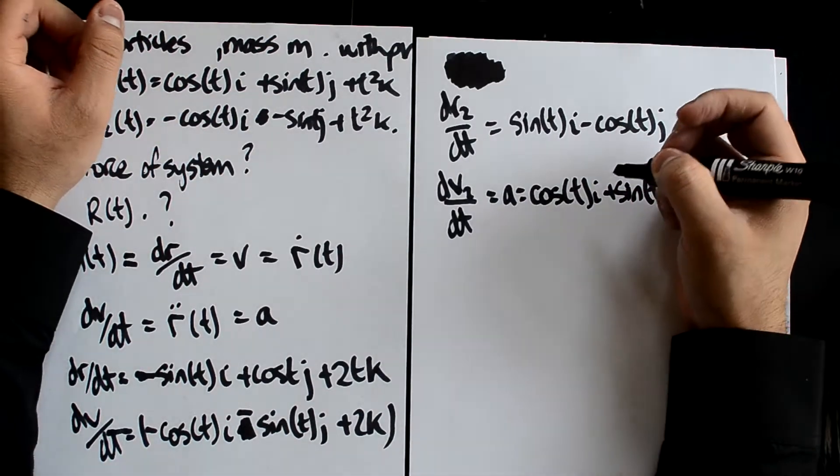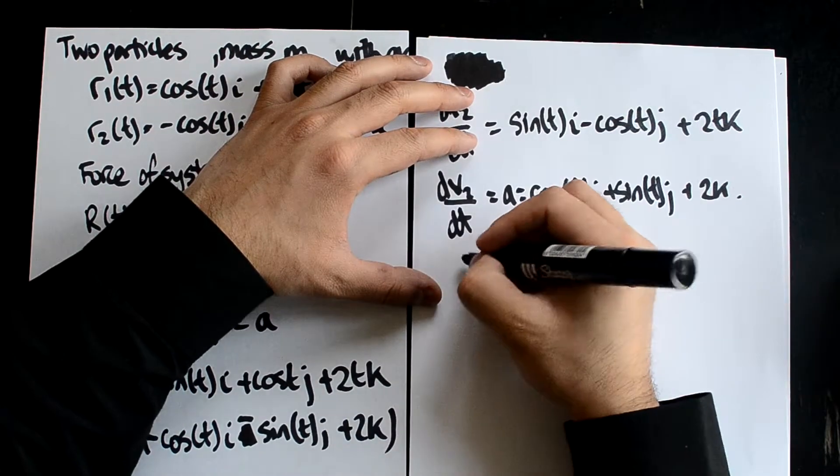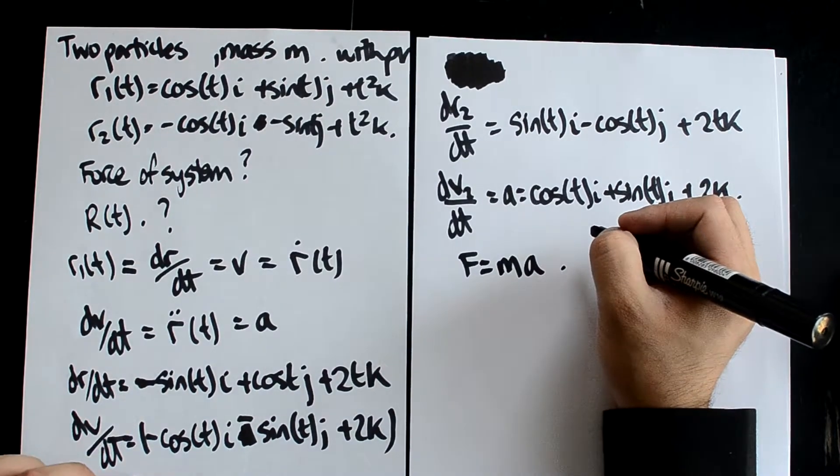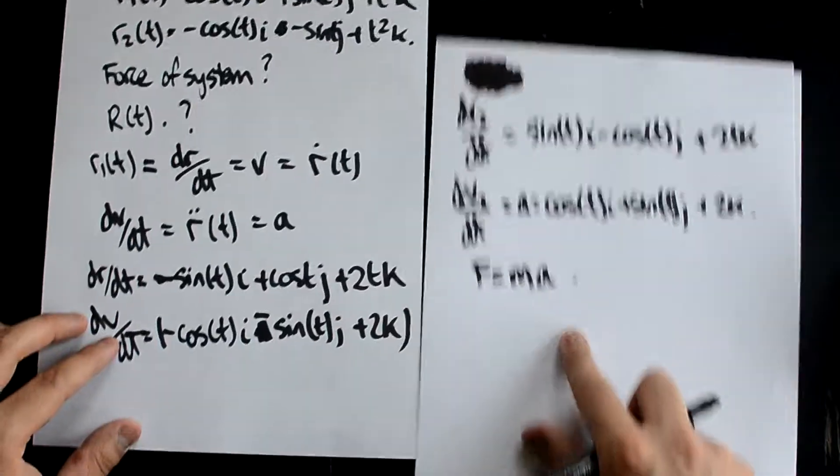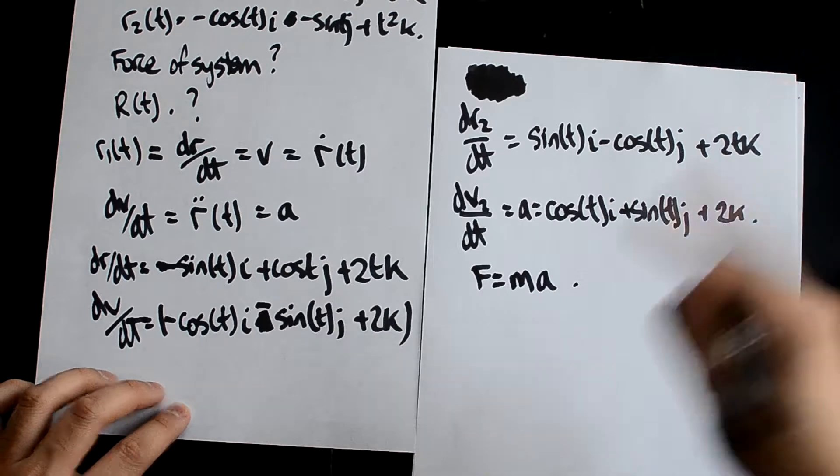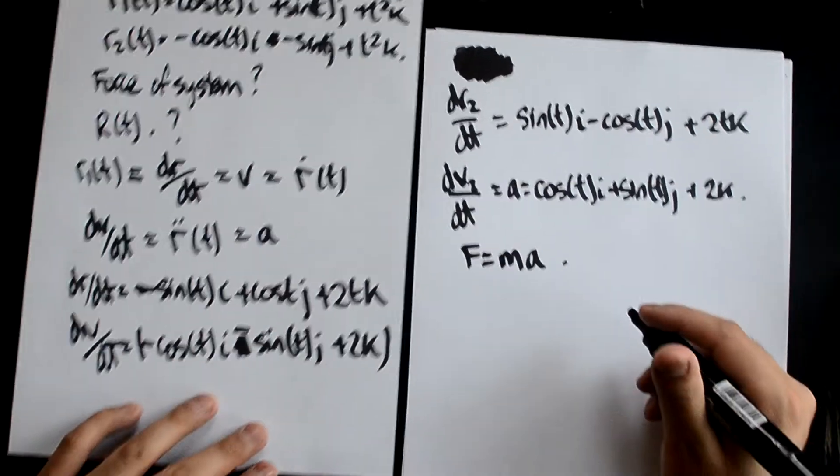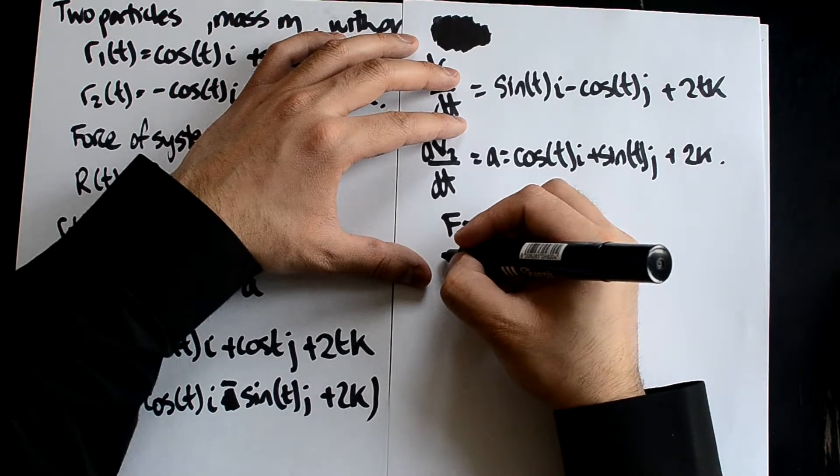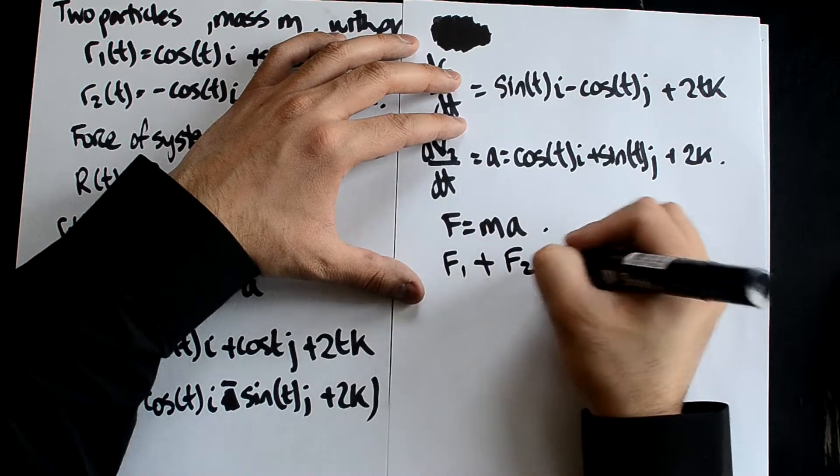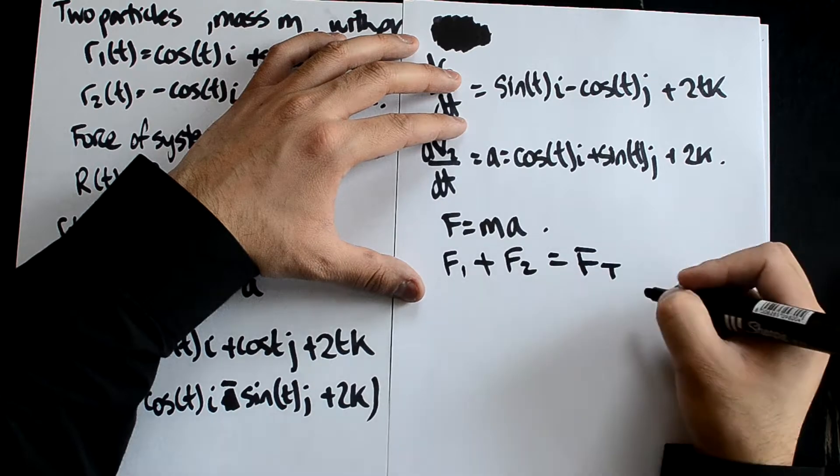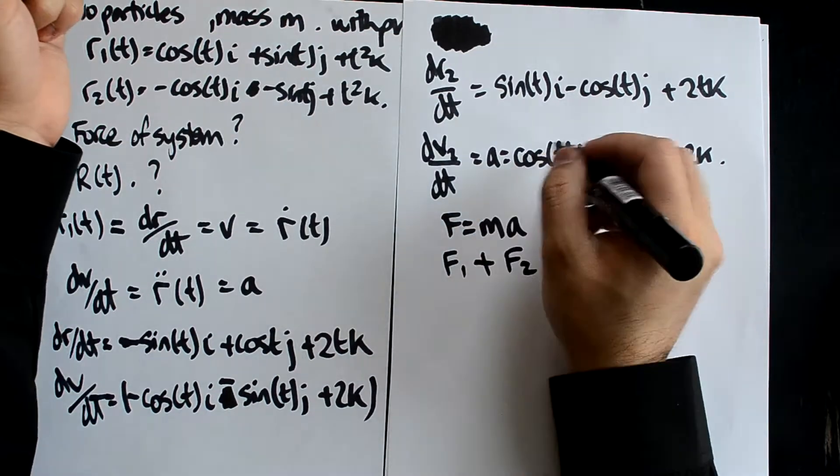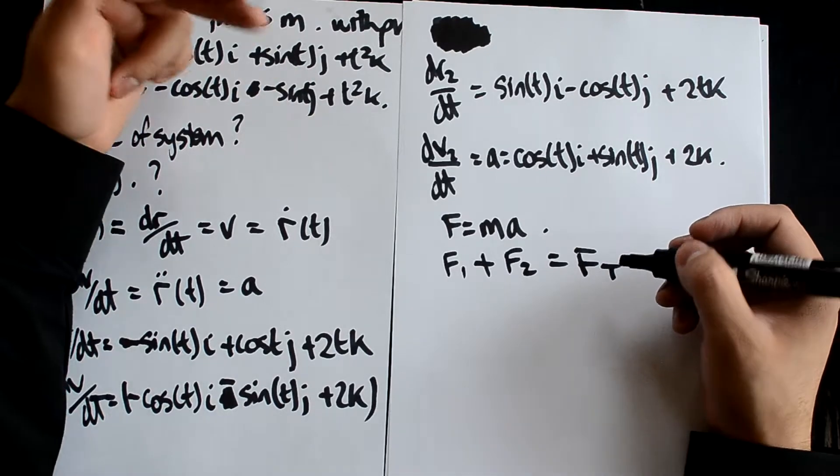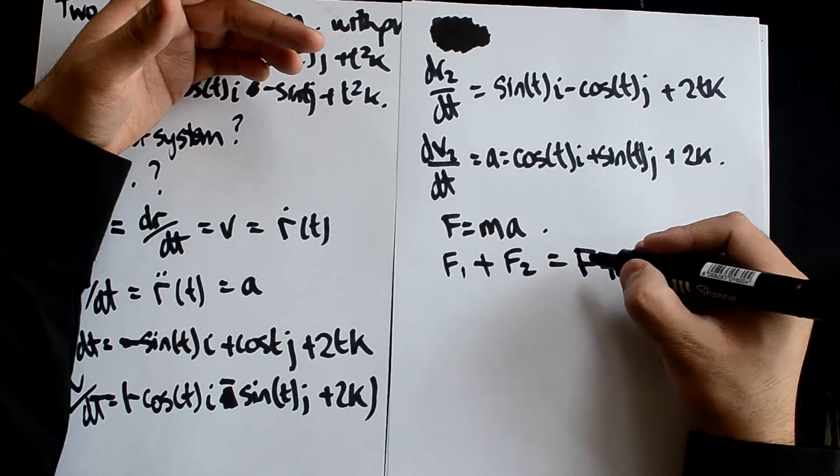We now know that the mass is M. So what we can then do is to use F equals MA. And all you're going to do here is do M times the whole of that and M times the whole of that to get the forces. So now the force of the entire system would be F1 plus F2 would equal force total.